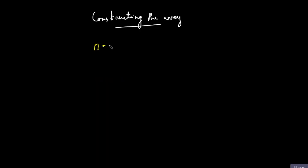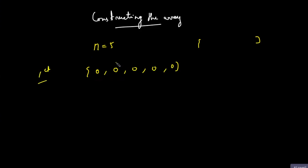So what is the problem? You will be given N and you have to print an array. Initially you have an array filled with zeros — for example, an array of size 5 filled with zeros. The problem says: if you had the first turn, you need to find the longest consecutive subarray that is completely filled with zeros. You find the middle of it and replace it. Since it was the first turn, you replace it by 1. So the array will look something like this.